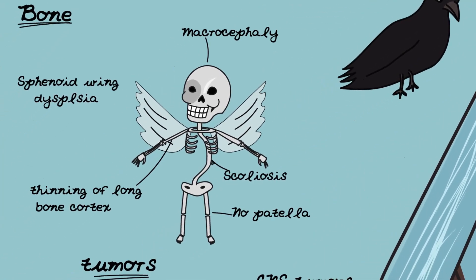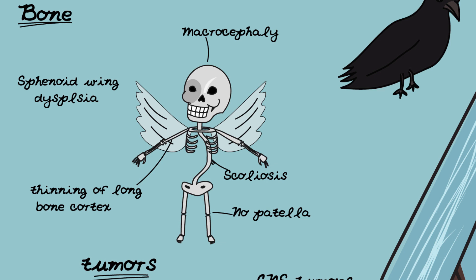In terms of bone abnormalities, we can see one of the white walkers here who has a really large head, which is macrocephaly. He also has a curved spine, so therefore he has scoliosis. There is no patella on his kneecaps. He also has thinning of the long bone cortex, which means it's more likely to break. And there is sphenoid wing dysplasia, which is one of the diagnostic criteria.